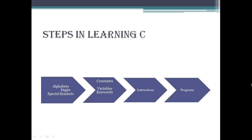These are the steps in learning C programming language. Alphabets, digits and special symbols will form constants, variables and keywords. The combination of these three will form instructions and when we compile our instructions together they will form programs.